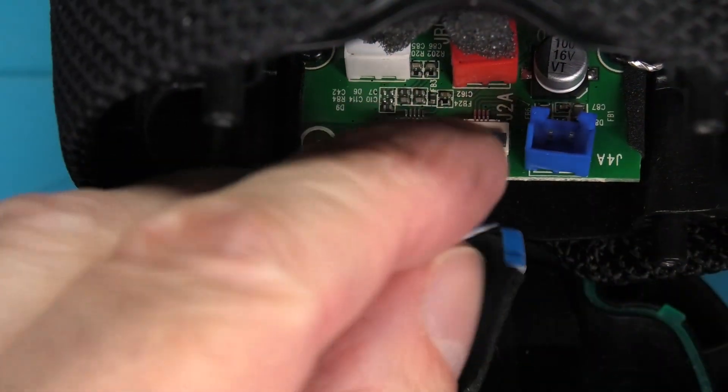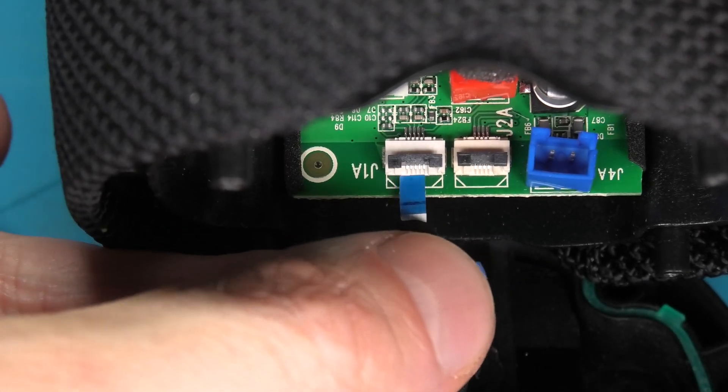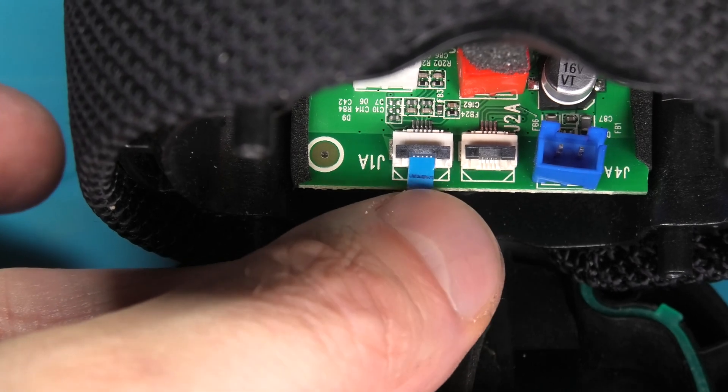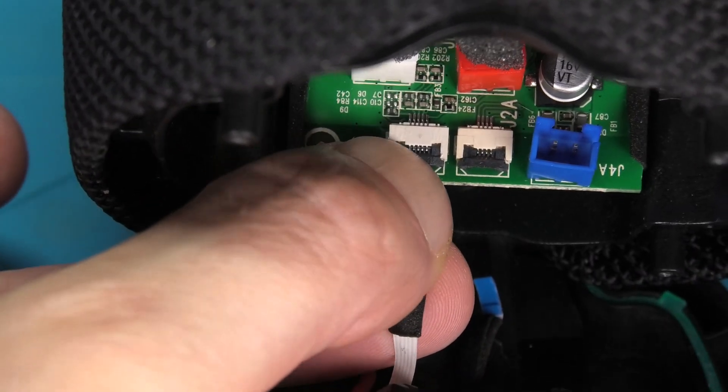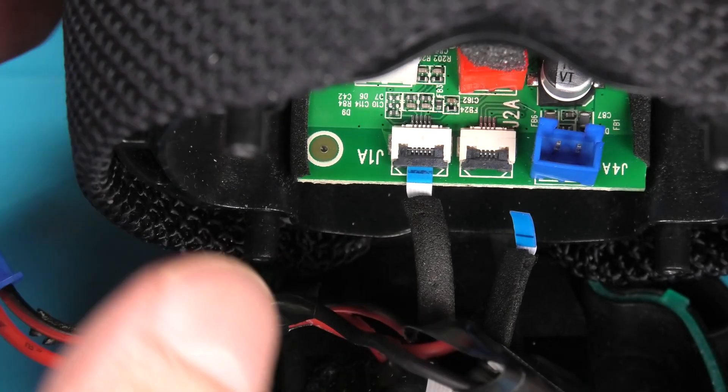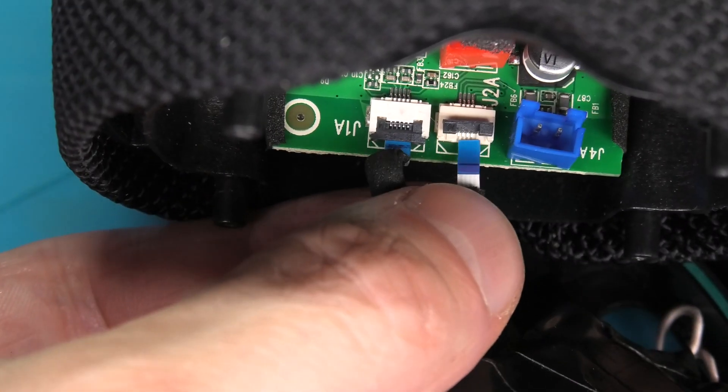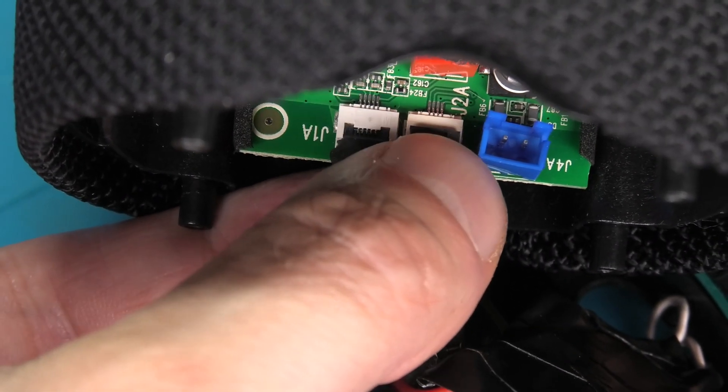And at this point we can already start to reassemble everything. We are starting out by reattaching those two small ribbon cables. So there is a slightly larger wider ribbon cable that goes to the left. So we are just going to stick this into the connector and then pull down on the lever. And then the slightly slimmer one that goes to the right.